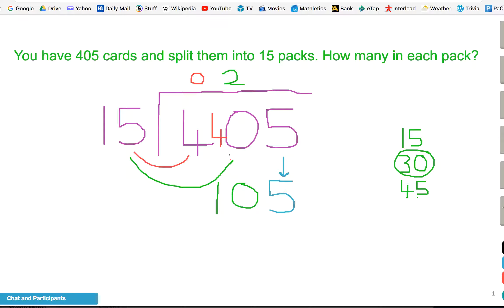Then it's how many 15s are in 105. So we just carry on with our little 15 times table outside here. So 60, 75, 90, and there's 105. So it's 7, 15s make up 105. So 7 goes at the top there. And that becomes your answer, 27.